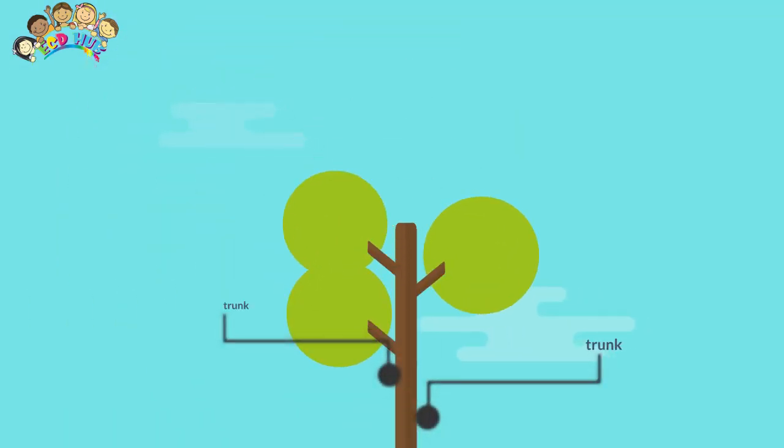As a tree grows, it may produce growth rings as new wood is laid down around the old wood. In areas with seasonal climate, wood produced at different times of the year may alternate light and dark rings.